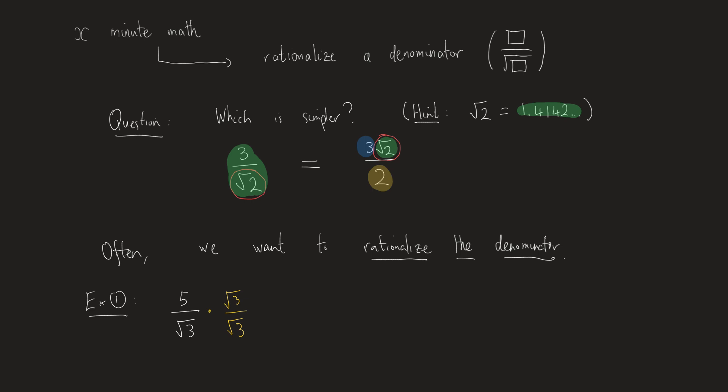Now, this doesn't change the value of 5 over the square root of 3 because I'm really just multiplying by 1, right? Root 3 over root 3 cancels out, simplifies to 1. But if I actually carry out this multiplication of fractions, what happens is I get 5 times root 3 in the numerator and I get root 3 times root 3 in the denominator.